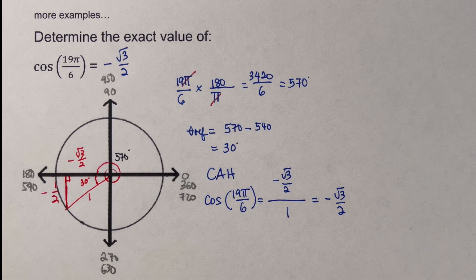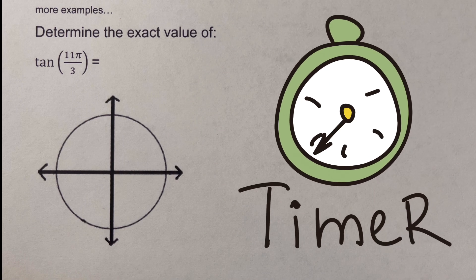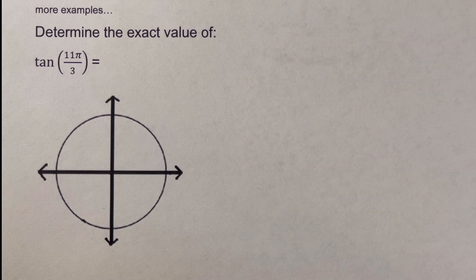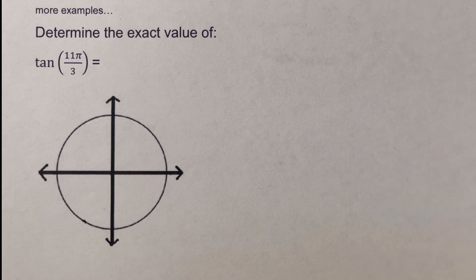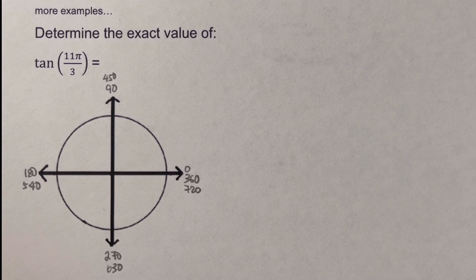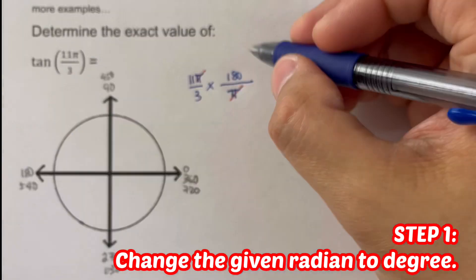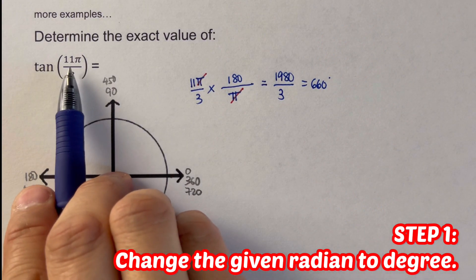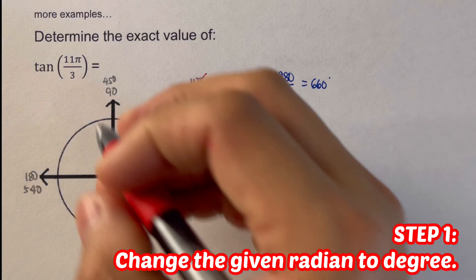Now let's move on to the next example. I encourage you to pause this video and try this problem on your own, then unpause and check your answer. We are supposed to determine the exact value of tangent 11π/3. The first step is to change the given radian to degrees: 11π/3 equals 660 degrees.